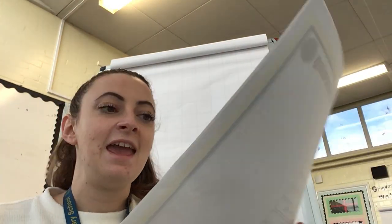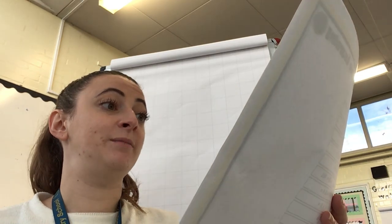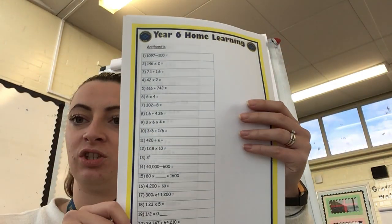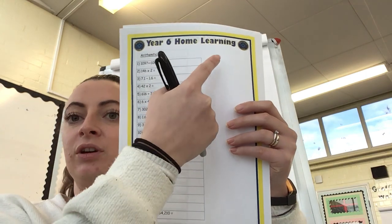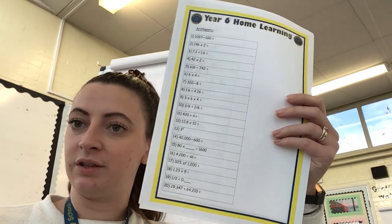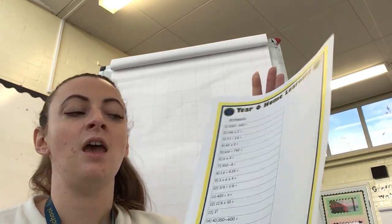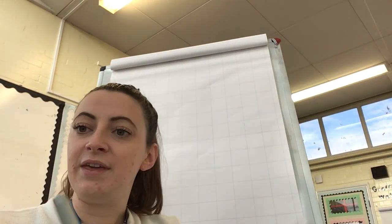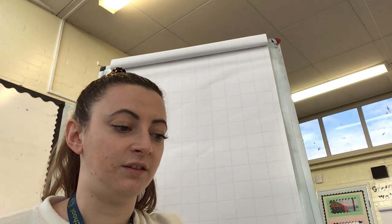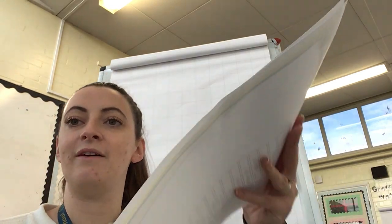Good morning Year 6. Now today's maths activity is an arithmetic practice. So you have got 20 questions to have a go at and you can answer them on the sheet or you can answer them in your home learning books. Lots of them will need you to have some written methods for your working out as well. Now this video is to go through the answers and to talk you through how you might have found the answers to some of these questions. So if you haven't yet completed the arithmetic, can you pause the video and then take a little bit of time to do that in your books.